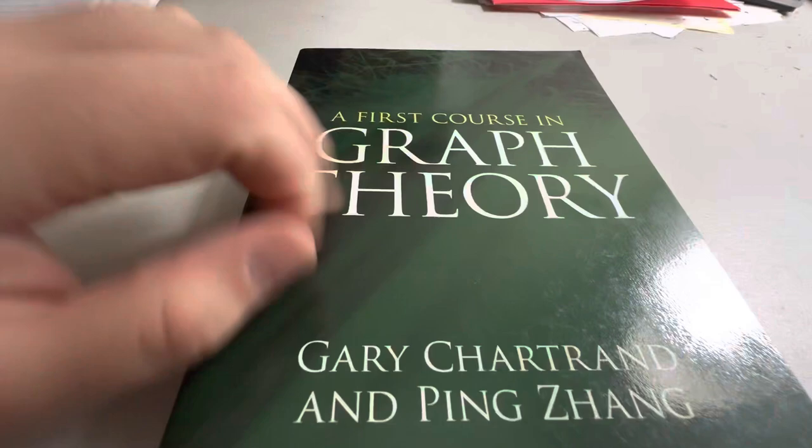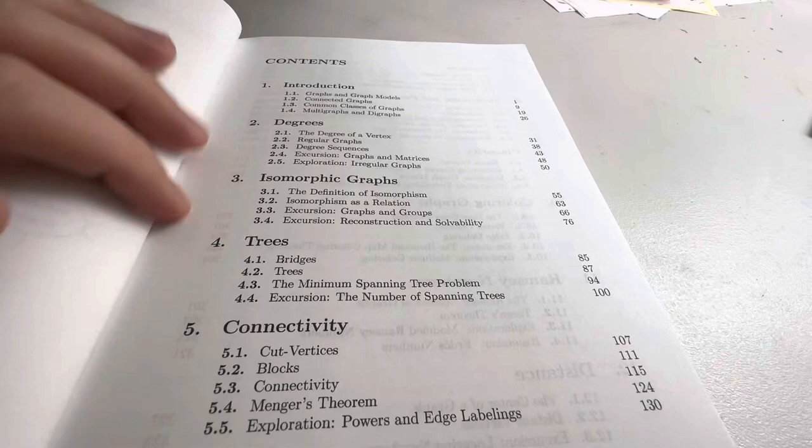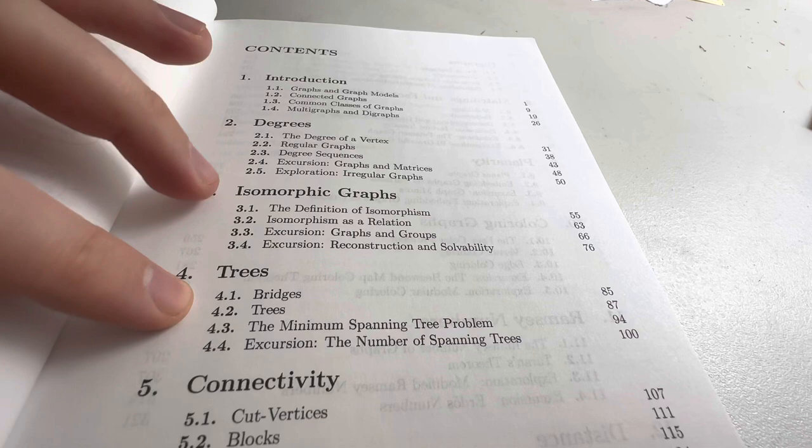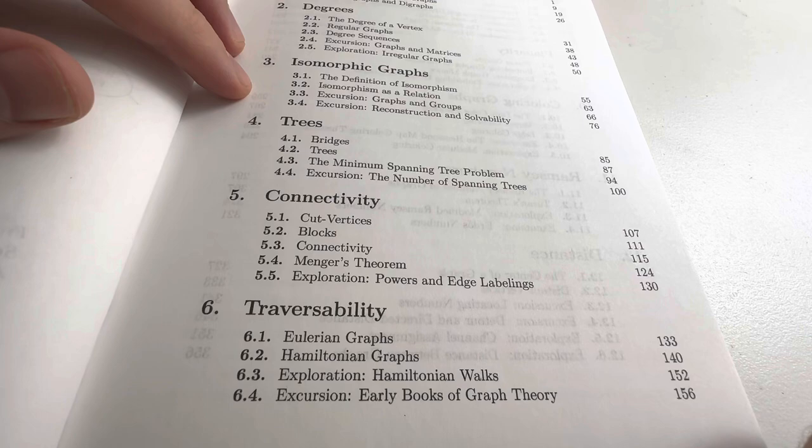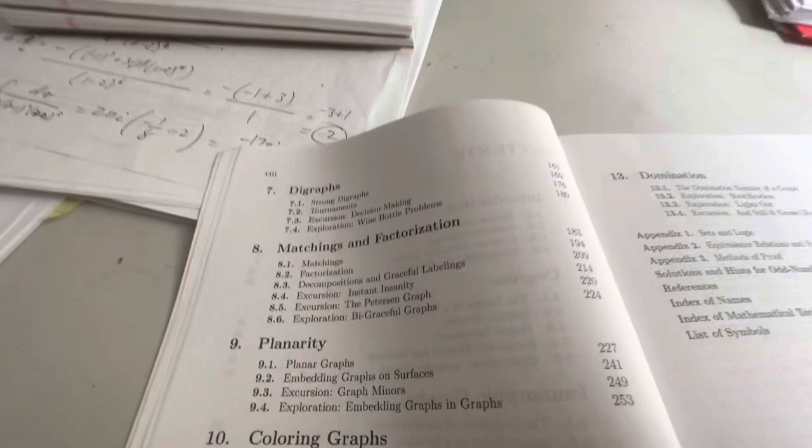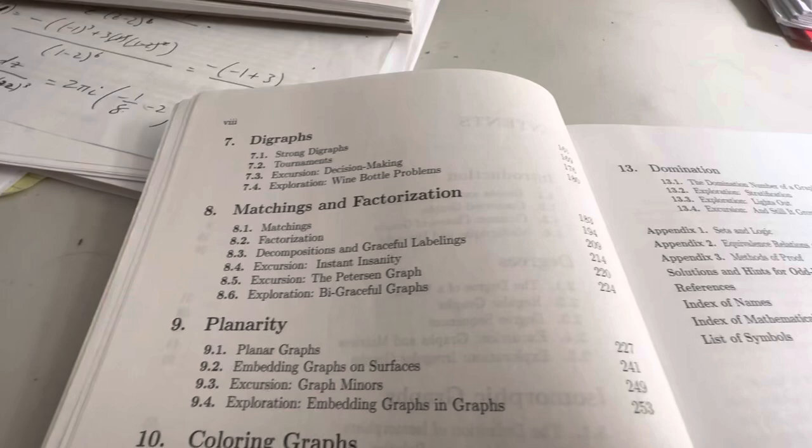And I guess I would say I would show you the graph theory book, but I'm not going to talk about it much because this is on my to-read list. A friend gave me this book. And I wanted to talk about this book, but I didn't know where else to put it. I didn't want to make its own video. So, we can see the table of contents: degrees, isomorphic graphs, trees, connectivity, traversability. Yeah, graph theory is kind of like its own thing. I think it kind of fits more into the world of algebra than analysis. But it's very different. You could probably also make the argument that it's in the world of geometry. But, you know, you can approach geometry from a number of different angles, right? There's algebraic geometry, differential geometry.